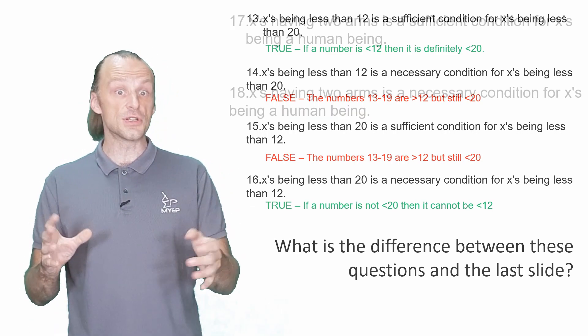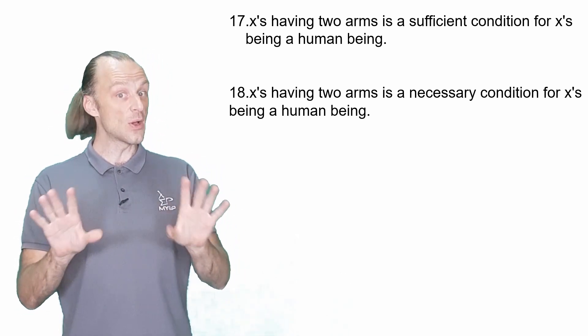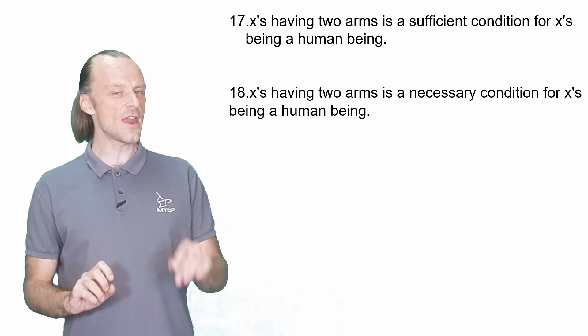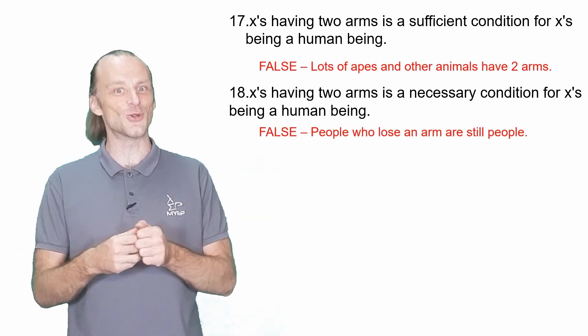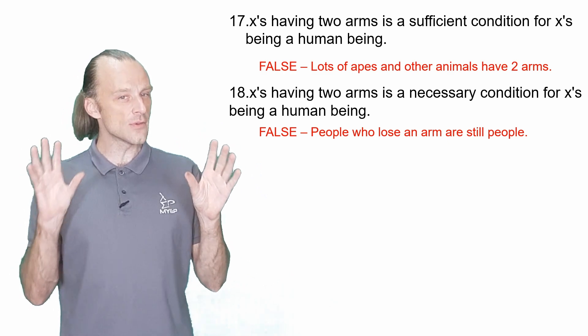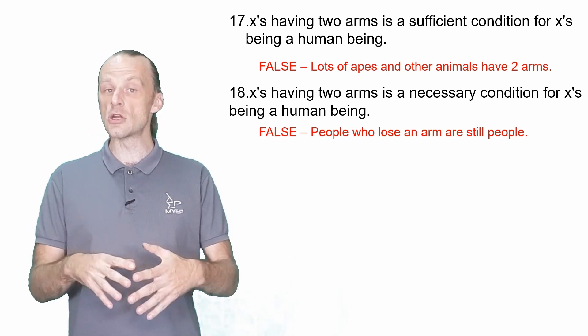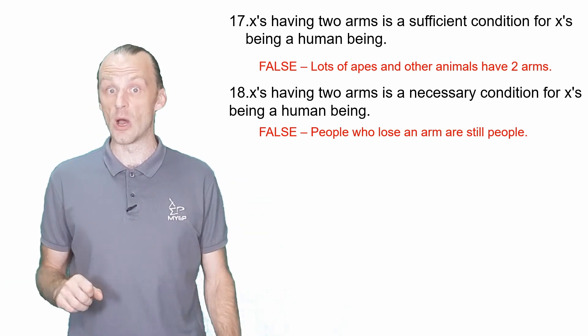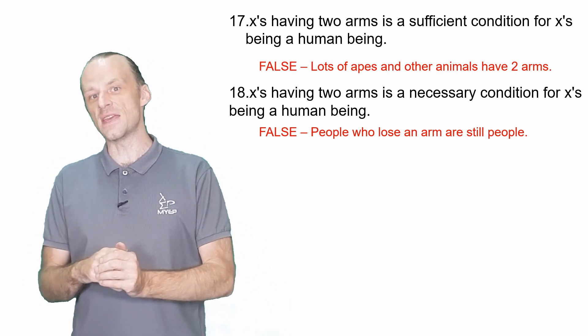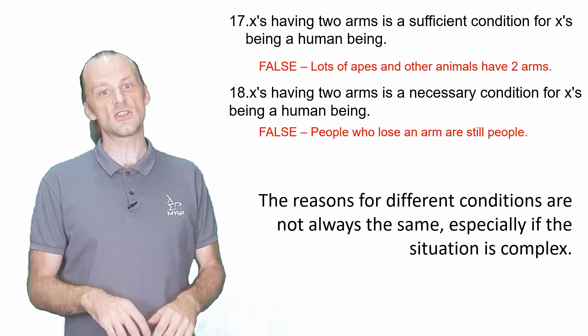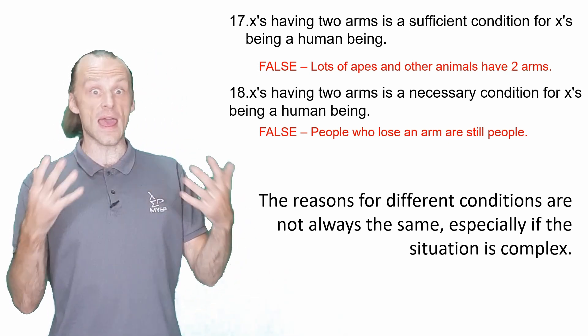The remaining six questions are in matched pairs. First, is having two arms sufficient or necessary for being human? Both of these examples are false again, but for very different reasons. Two arms is not sufficient for humanity because lots of animals have two arms. So if A is true, this does not guarantee that B is true. For question 18, two arms is not necessary for humanity because a human who loses an arm or is born with more than two arms somehow is still a human. So A being false does not guarantee that B is false. You could make inverse examples of these just like we saw with the earlier slides. In the same way, abstract situations lead to abstract reasons.